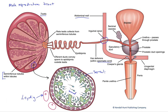It starts out as a stem cell, a germ cell known as the spermatogonium — the cell that's going to divide and differentiate to produce these numerous sperm cells.